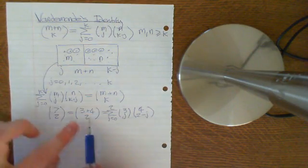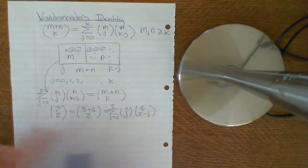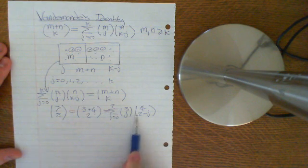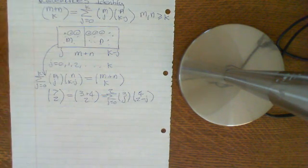So sometimes it'll be useful to go in this direction, to write this as this, well, this as this, and sometimes, more often, it'll be useful to take something that looks like this and turn it into something that looks like that. So that is Vandermond's identity.